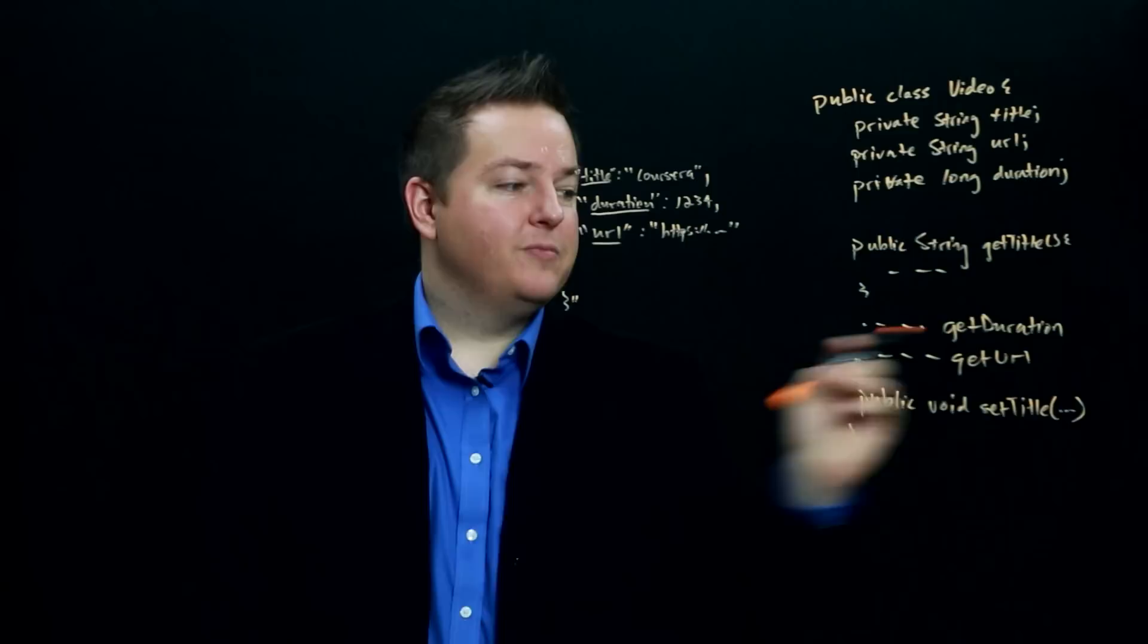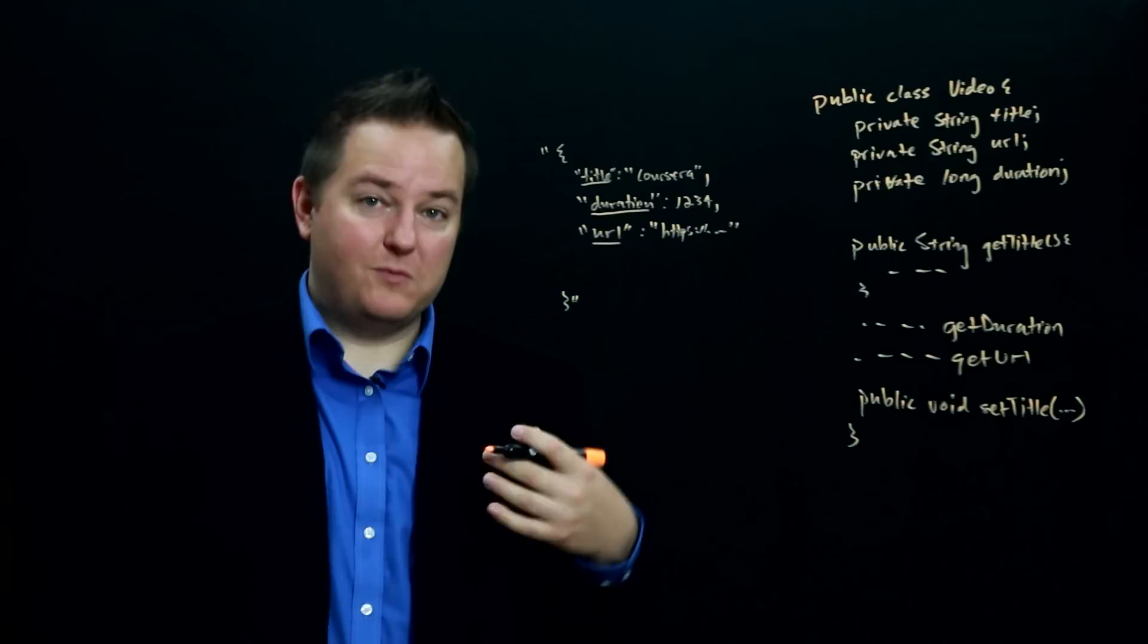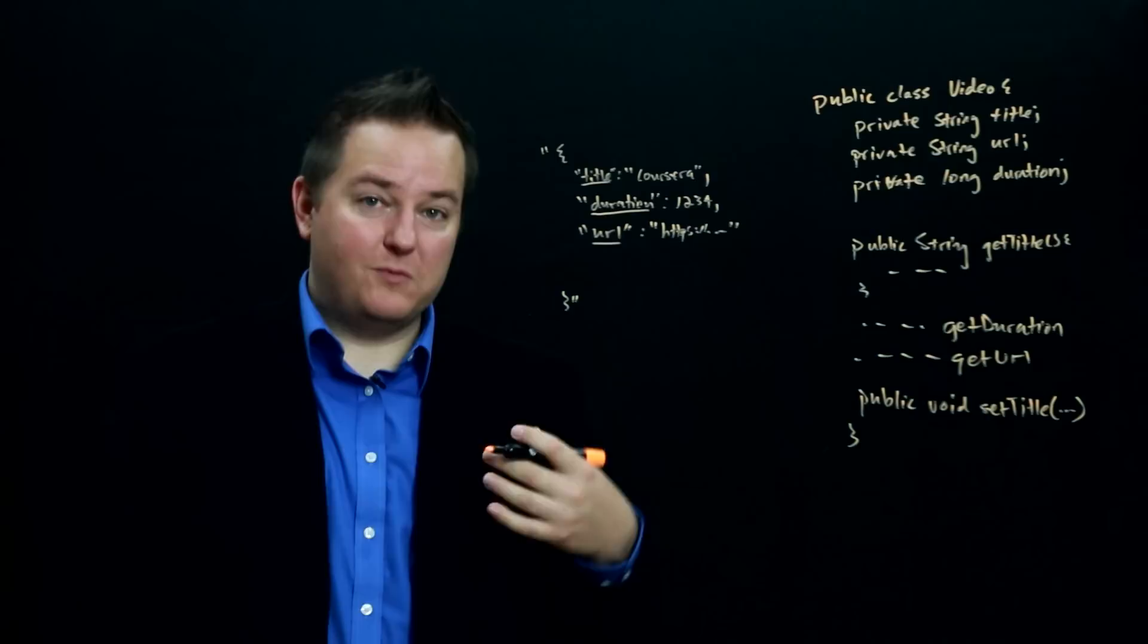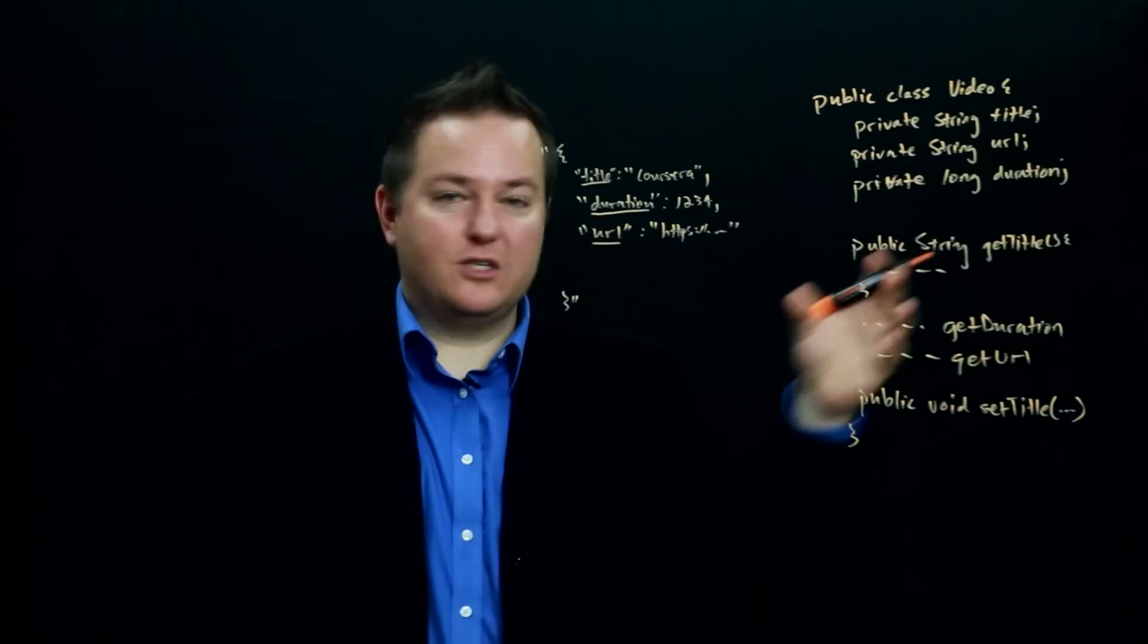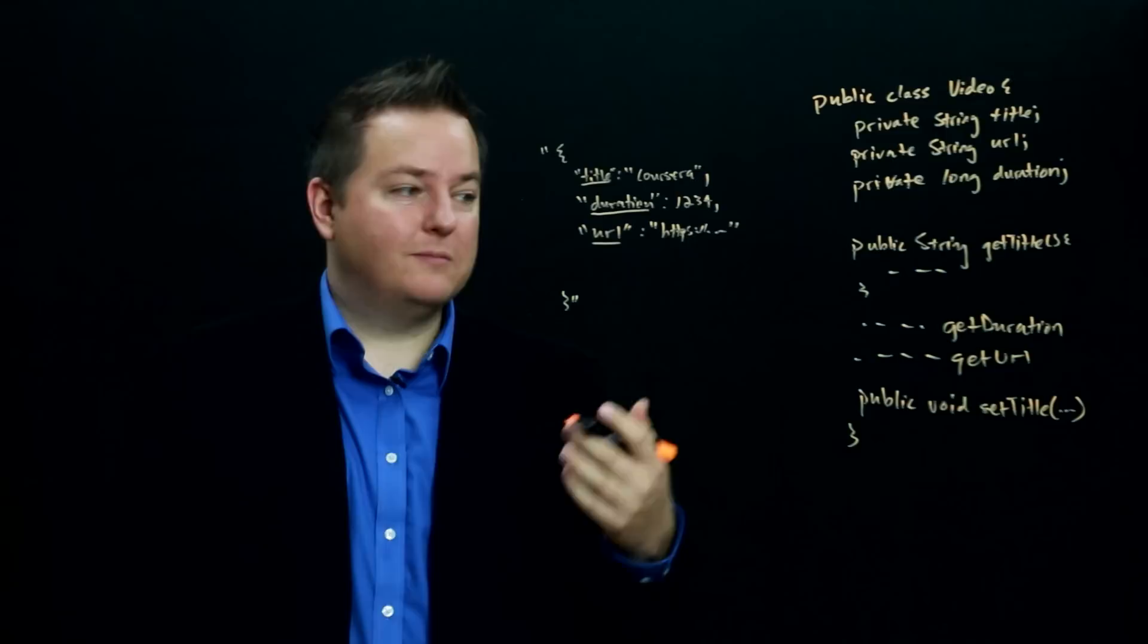So it's a lot like what our spring controller is doing where it's automatically constructing our controller objects and calling methods on them. In this case, the underlying Jackson framework is going and looking at the different pieces of JSON and then automatically constructing objects that we tell it to construct and then mapping the different properties in those JSON objects to the getters and setters inside of our class.